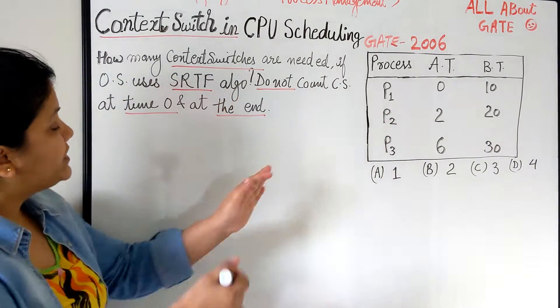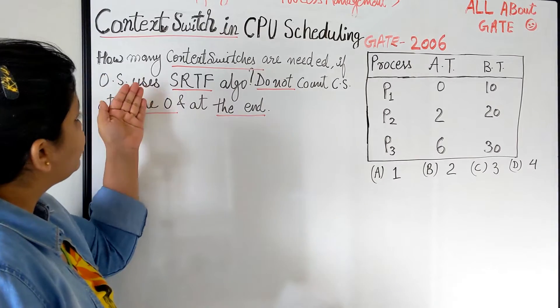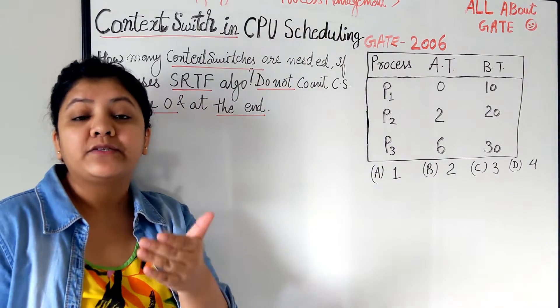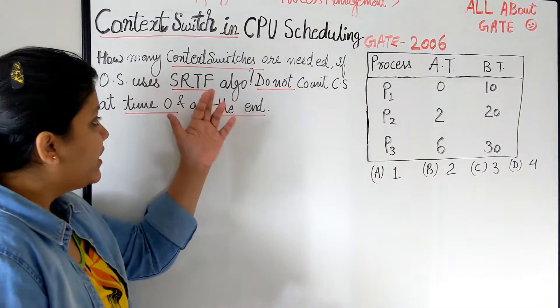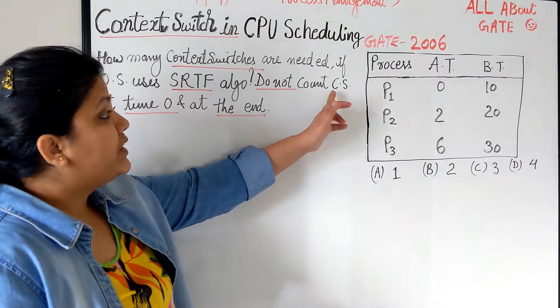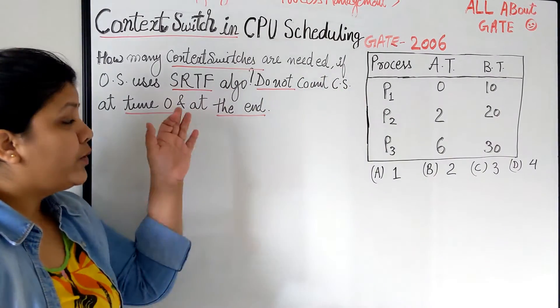How many context switches are needed if the operating system uses SRTF, shortest remaining time first algorithm? Do not count the context switch at time 0 and at the end.